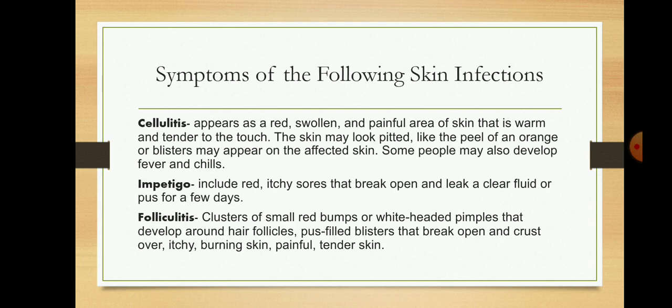The symptoms of the following skin infections: cellulitis appears as a red, swollen, and painful area of skin that is warm and tender to the touch. The skin may look pitted like the peel of an orange, or blisters may appear on the affected skin. Some people may also develop fever and chills.